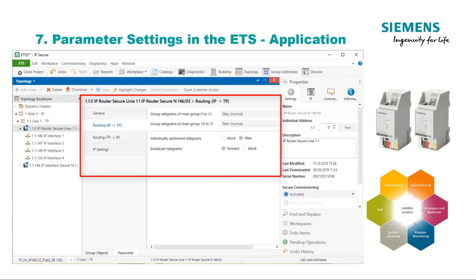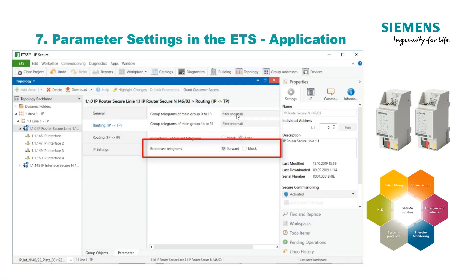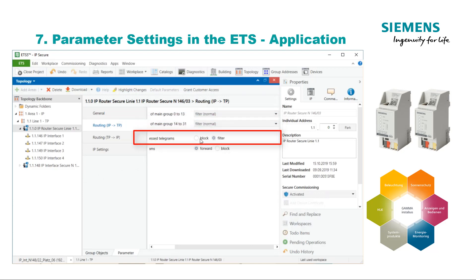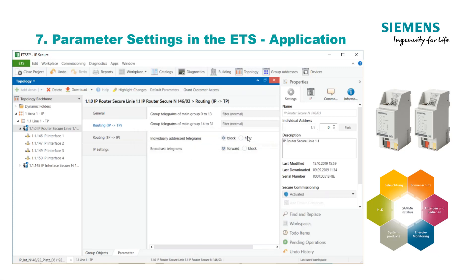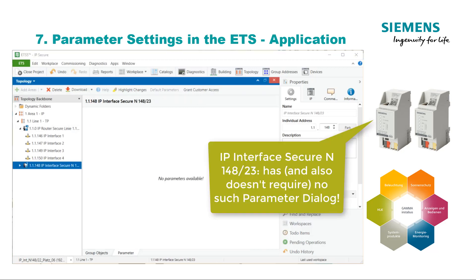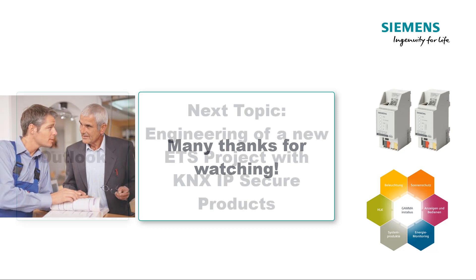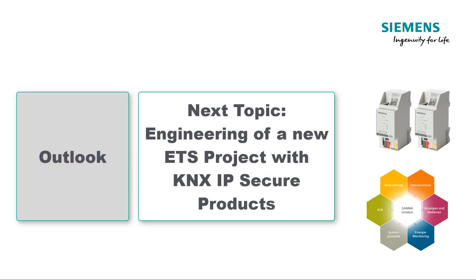The device parameters of the IP Router Secure contain separately adjustable directional forwarding strategies for broadcast, group addresses, and individual communication via physical address, as known from the predecessor N14602. The IP Interface Secure N14823 has no further parameters. Many thanks for watching. Next, learn how to create a new ETS project with a KNX IP Secure product.